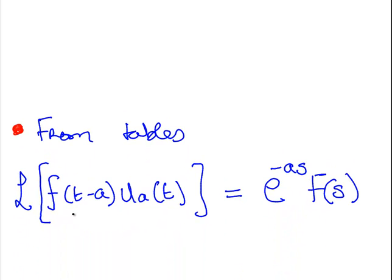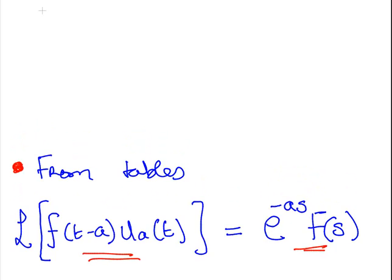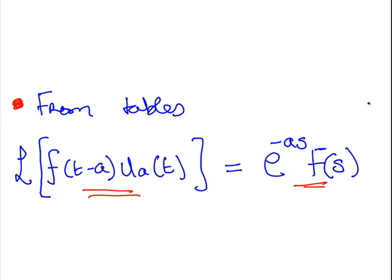What we have here is, from the tables, this is from the Laplace transform tables. f of t minus a times u of a of t is the Laplace transform. If the function of t is in this sort of form here, this is the equivalent of the Laplace transform. That's essentially the game plan here.